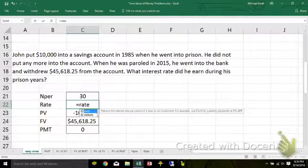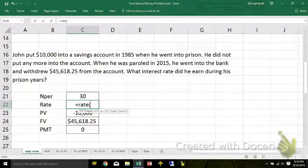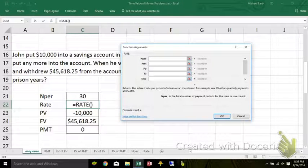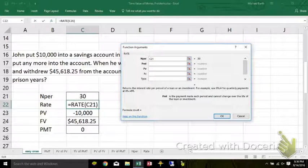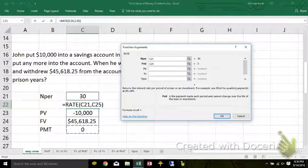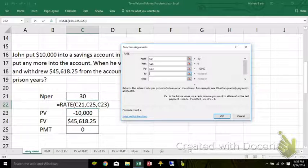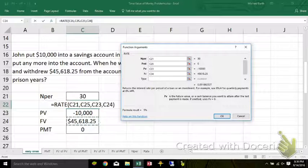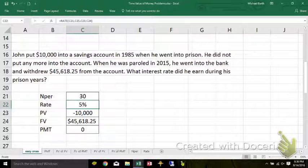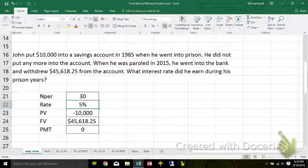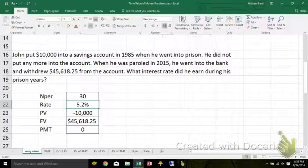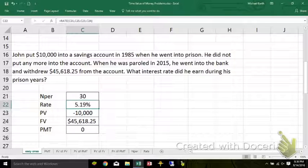Solving for rate, equals rate, open parentheses, click on the FX button, you get the dialog box. Number of periods, the payment is zero because he didn't put anything else in. Started with $10,000 out of his pocket. He puts $45,000 back in his pocket. Excel defaults to percent and no decimal places. You need to show decimal places. That's 5.19%.